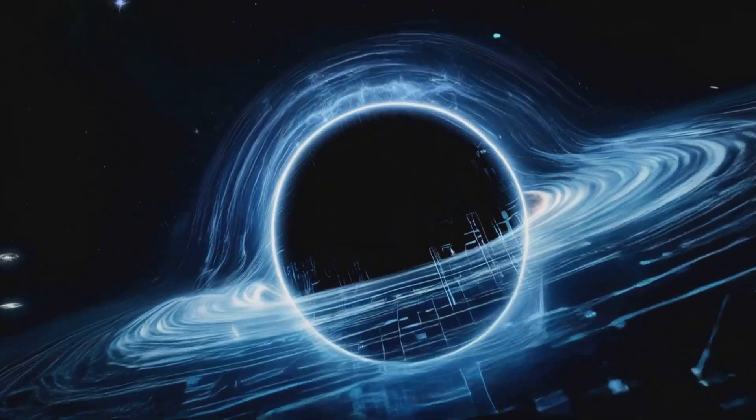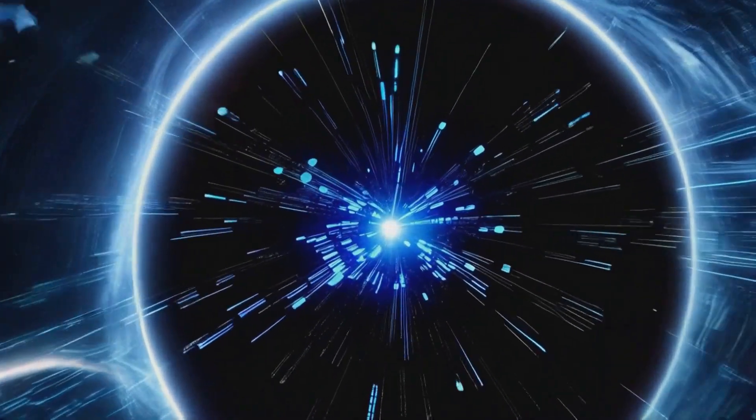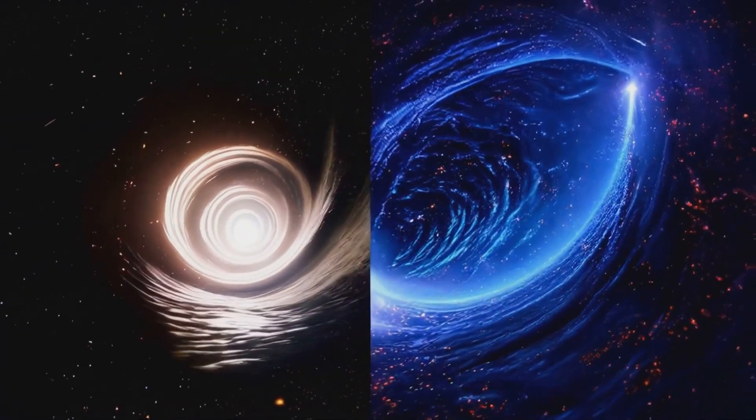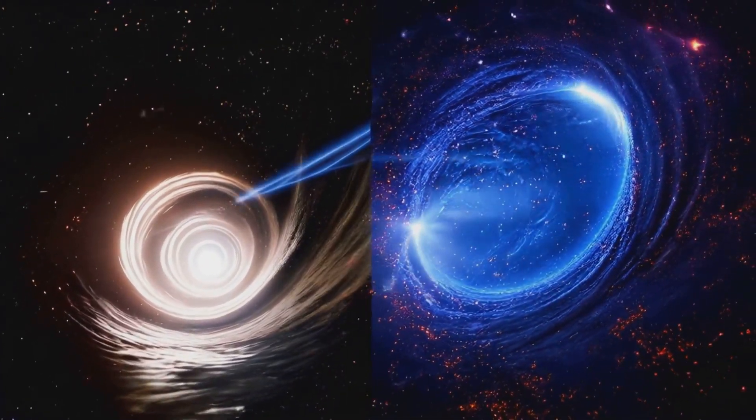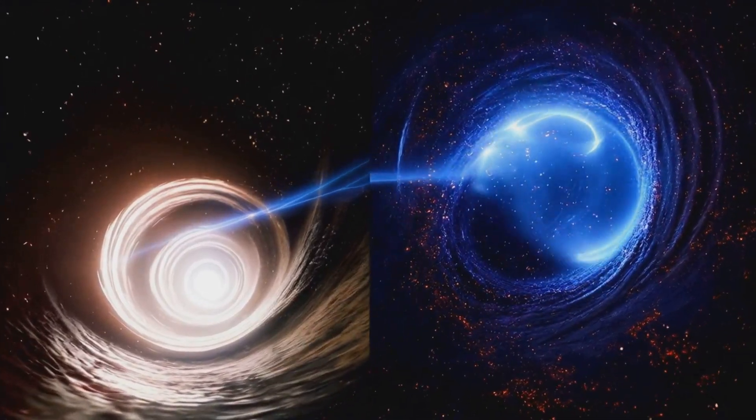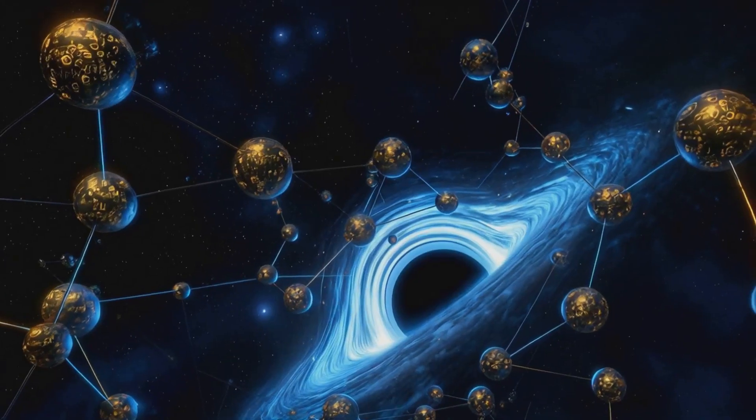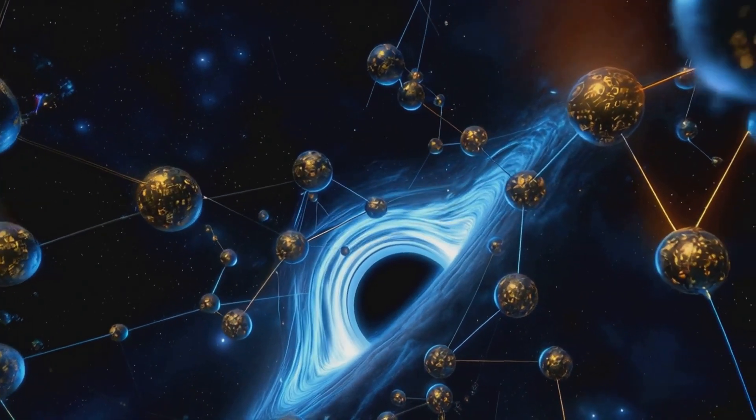The black hole operates like a quantum computer, constantly processing and encoding information. The singularity and event horizon act as its hardware, while Hawking radiation is the software. The single spin system ensures precise interactions, conserving information across the entire system.